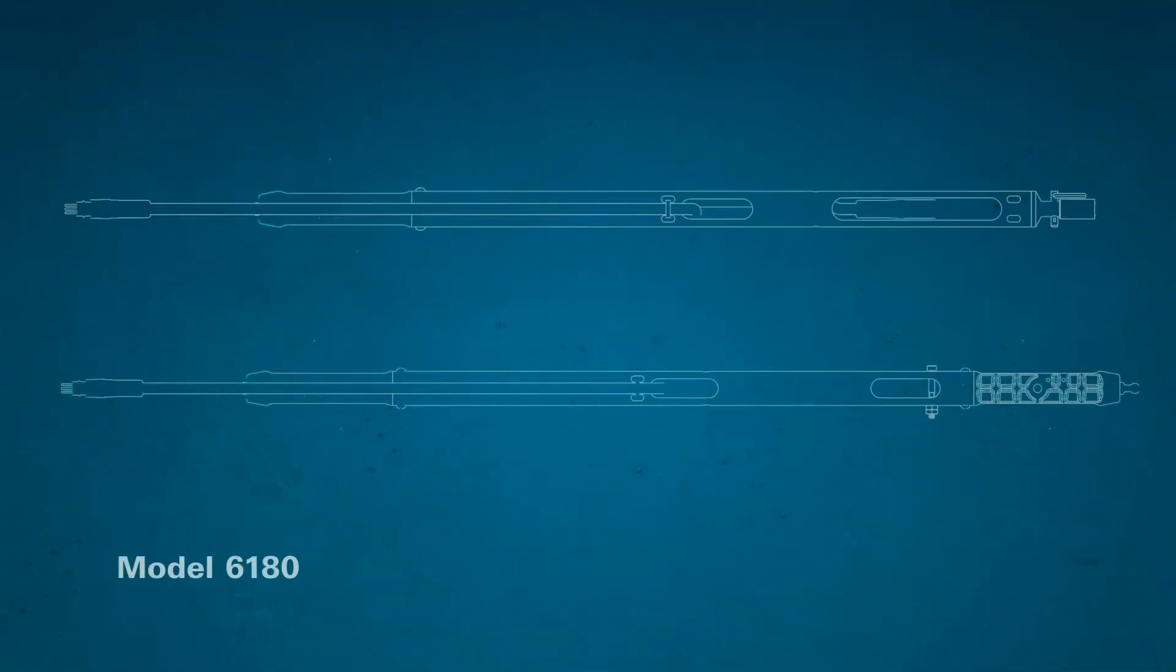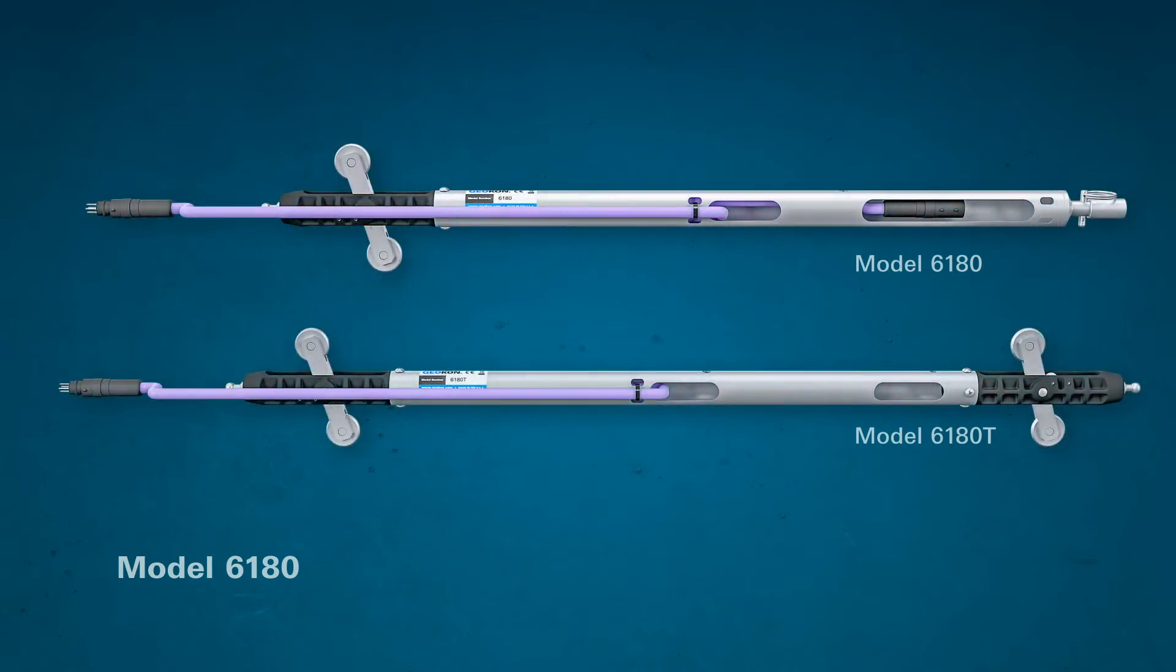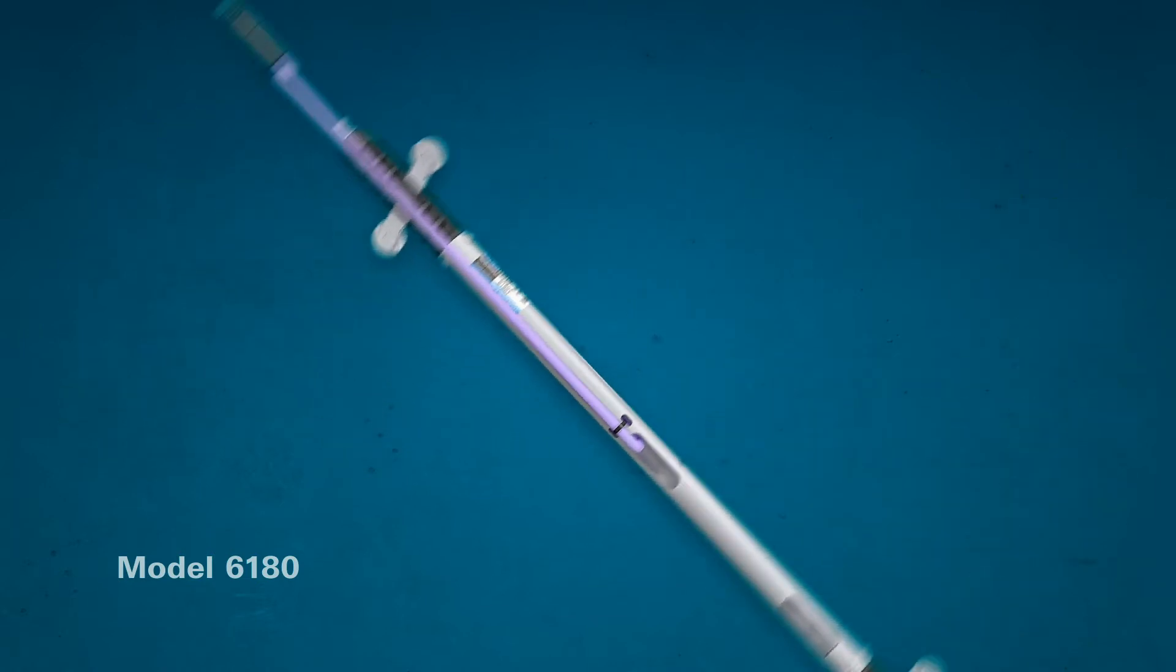With the Model 6180, GECON has redesigned the in-place inclinometer to reduce overall system weight and to simplify the process of system installation.